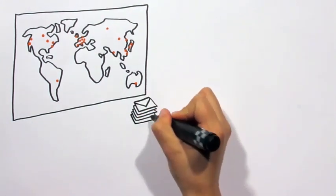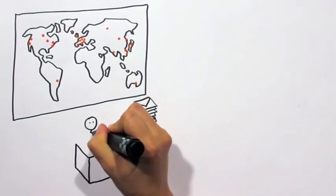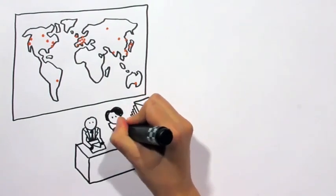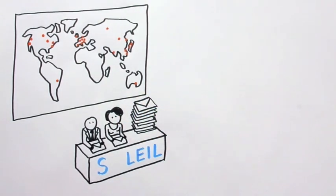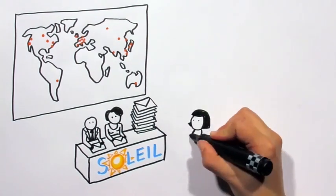The scientists coming to carry out experiments at Soleil are called users. To become a user, they must send a request several months in advance. Then boards of specialists choose the best research projects.